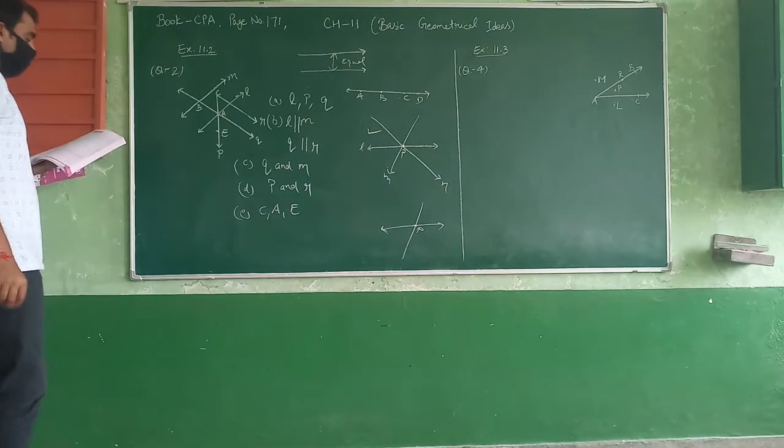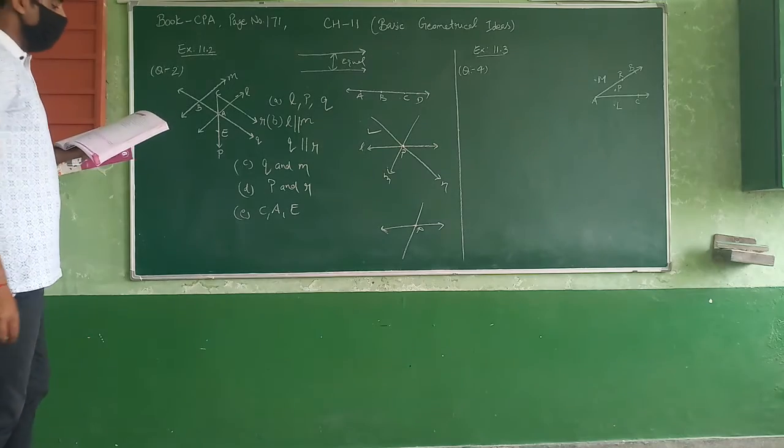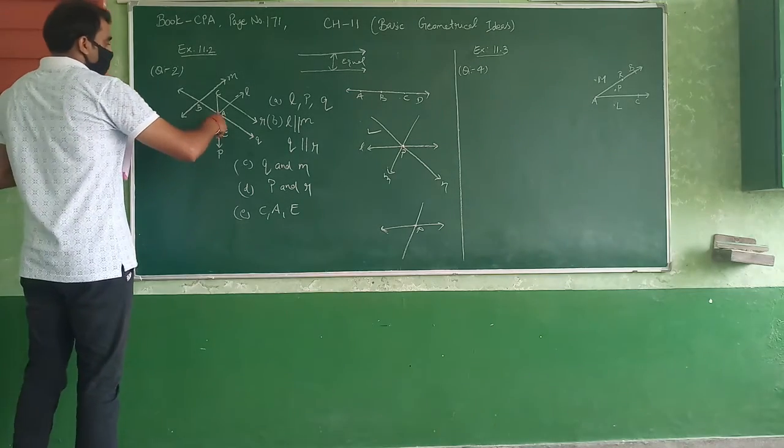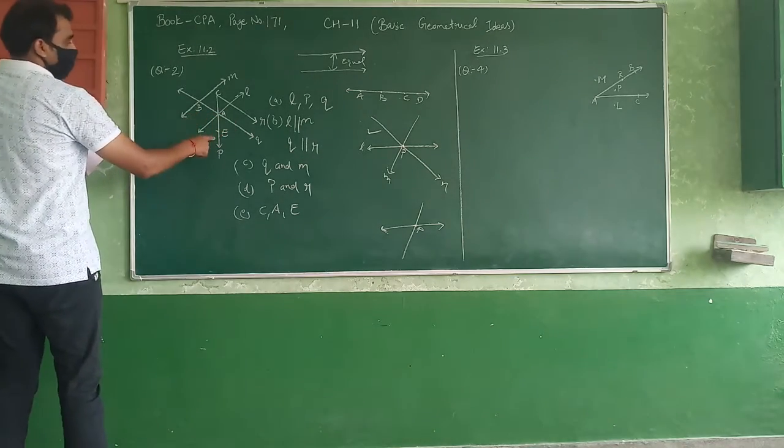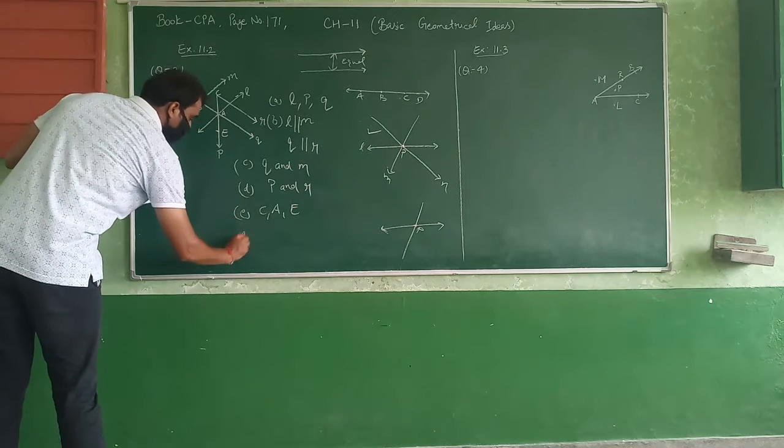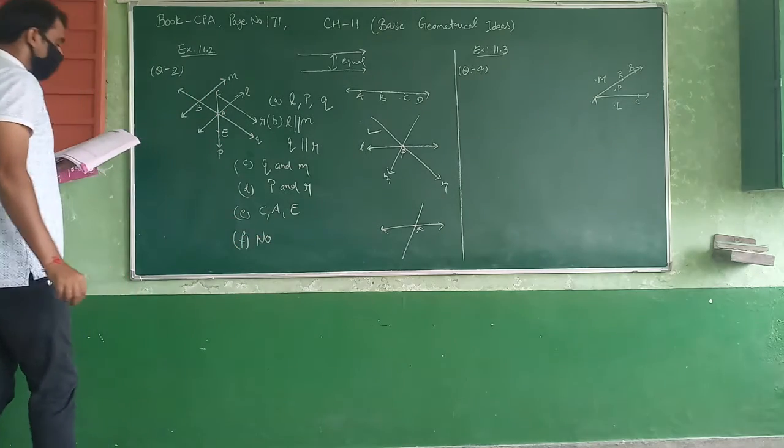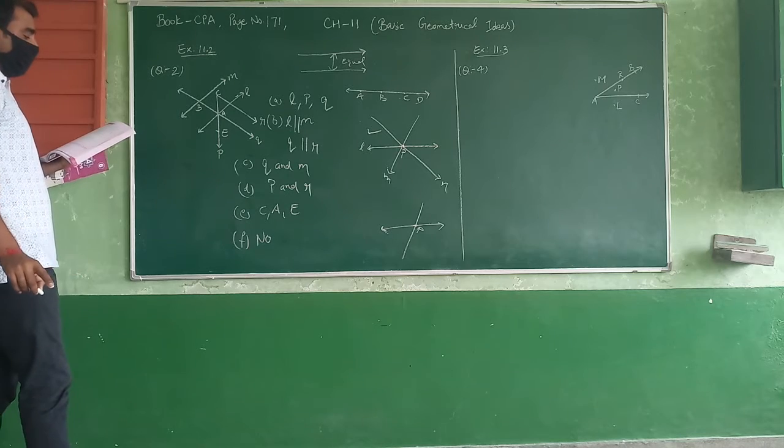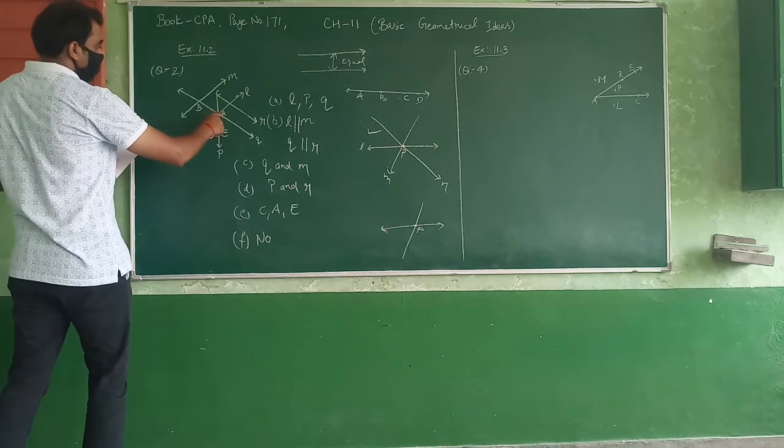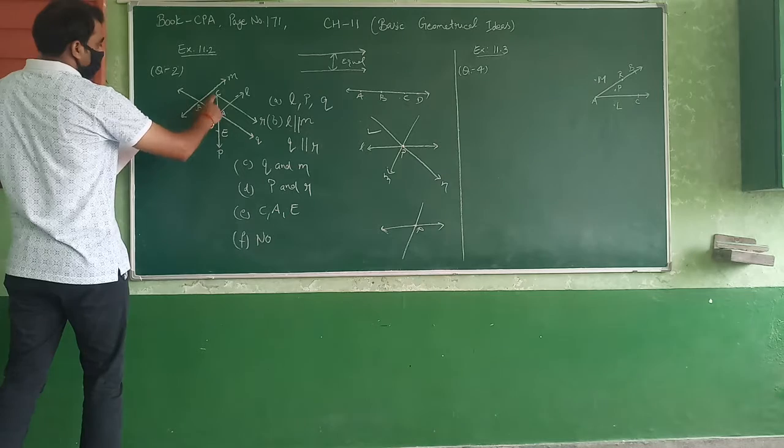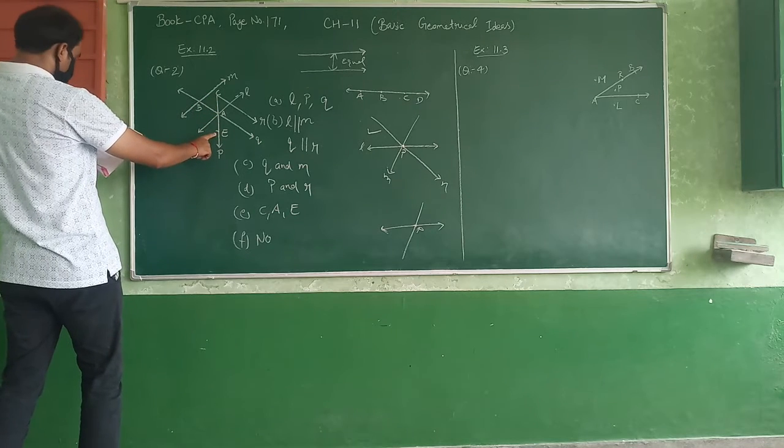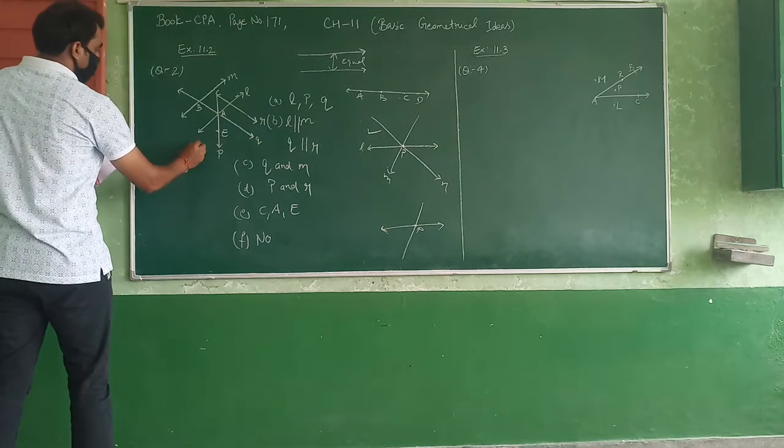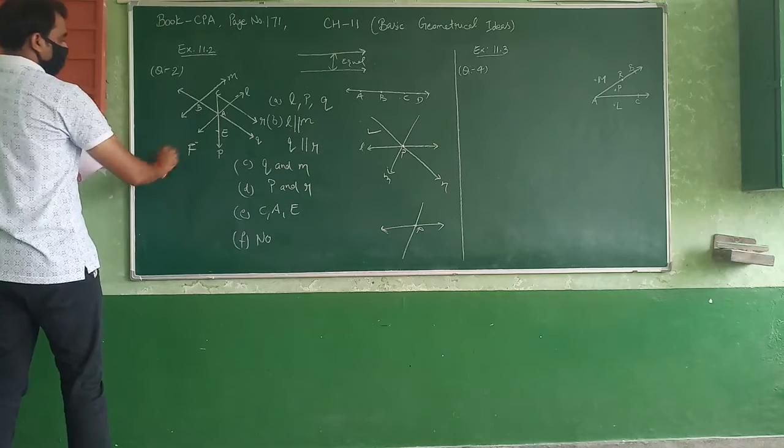So F: Are R, A, D, and E collinear? No. And G: Are R, C, A, E, and F collinear? C, A, E, and F - F is here. No, G is also no.